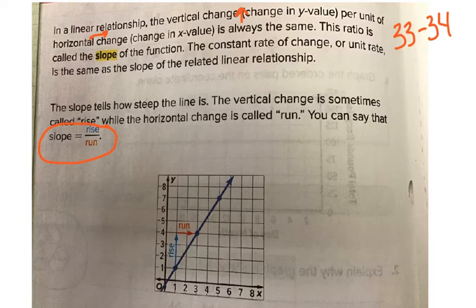So think of rise as like the sun rising. That means the number of how far it goes up goes on the top. And then run, think of like you would rather run on a flat surface than going up a hill. So run is the side-to-side value.